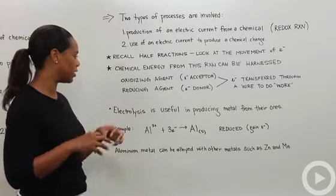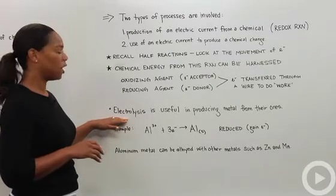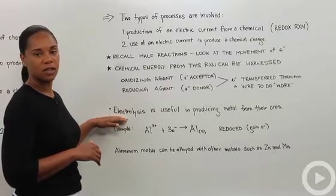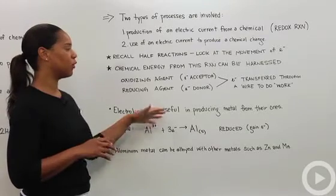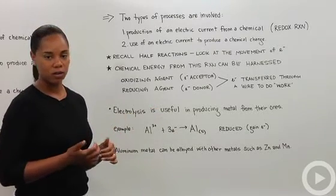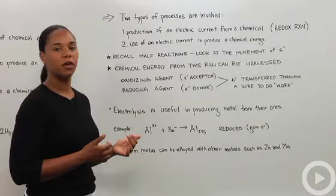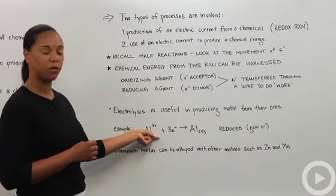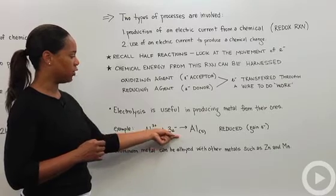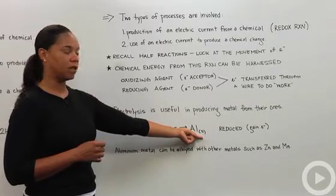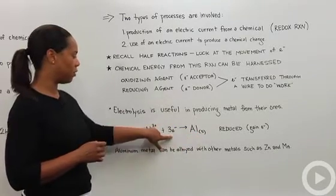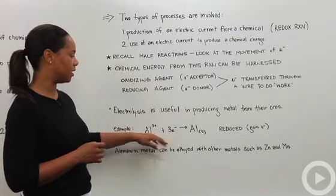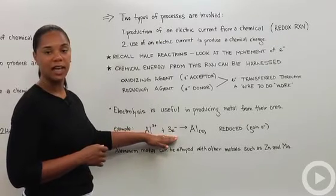A basic application of electrolysis that happens in everyday life is useful for producing metal from their ores. One of the most common ones is aluminum. You can take aluminum ions with a three plus charge and they'll be reduced and you get an aluminum solid out of that. I wrote the electrons on this side because it's being reduced, which means it's gaining electrons.